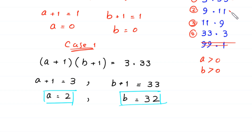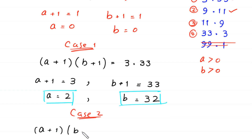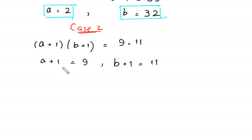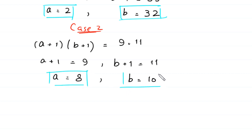Case 2 is 9 times 11. We write (A plus 1) times (B plus 1) equal to 9 times 11. So A plus 1 equals 9 and B plus 1 equals 11. Subtracting 1 from both sides of each equation, we get A equals 8 and B equals 10.